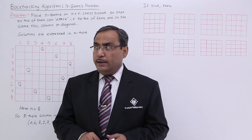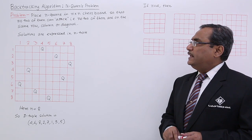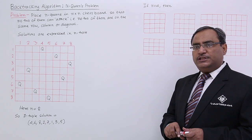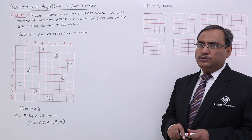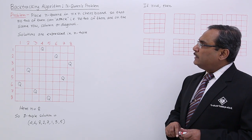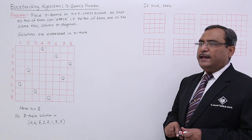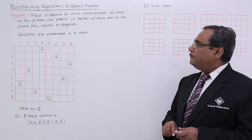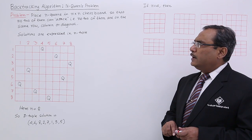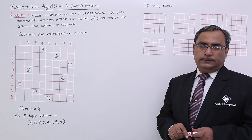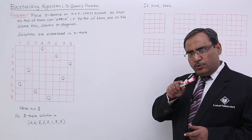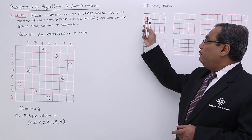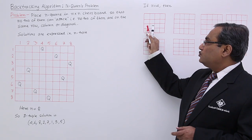The problem is like this: place N number of queens in an N×N chess board. An N×N chess board has N number of rows and N number of columns, such that no two queens can attack each other. That means no two of them are on the same row, column, or diagonal — including all diagonals, not just the major ones.